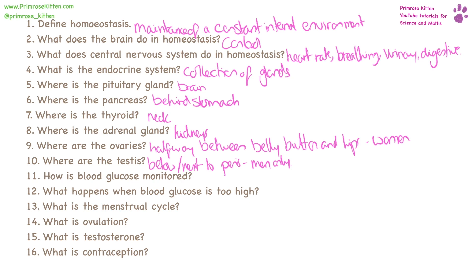Blood glucose is monitored by a combination of the liver and insulin. When blood glucose is too high, the liver converts it to glycogen.